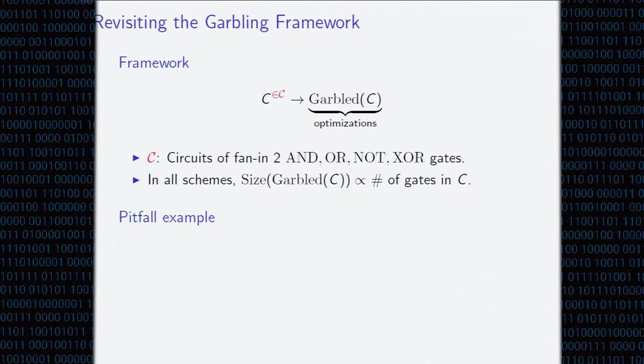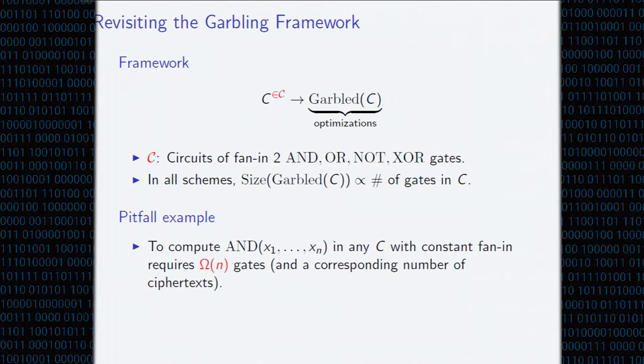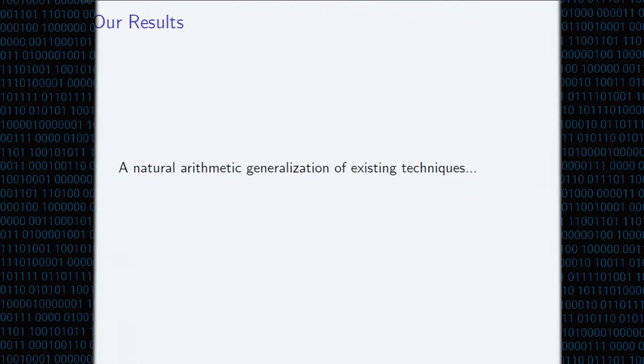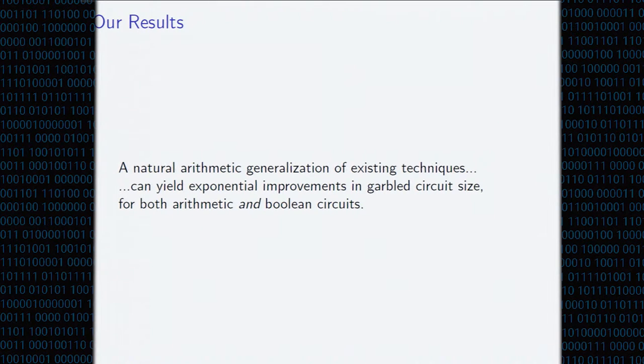This is all well and good, but it can lead to sort of problems where, if we want to compute like the conjunction of n values, we want to garble this, this is going to require roughly n gates if we have any sort of constant fan in. But we can also think about circuits where this is just a single gate. And in particular in our scheme, we give a scheme where we can garble an AND gate, a conjunction of n inputs for poly logarithmic number of cipher types. So what do we do? In brief, we show that natural arithmetic generalization of existing techniques can yield exponential improvements in garbled circuit size when you're computing over either the integers, and surprisingly, even for Boolean things.